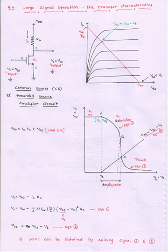We are interested in linear amplification — that is, amplifiers whose output signal is linearly related to their input signal. The technique we will utilize to obtain linear amplification from a fundamentally non-linear device is that of DC biasing the MOSFET.